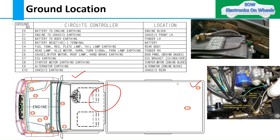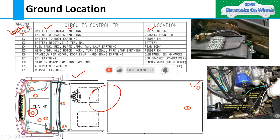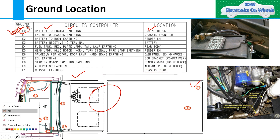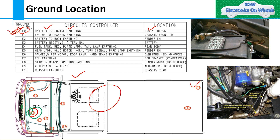Let's start with the grounding. The first grounding point is E0 — you are giving a reference grounding point. E0 is from the battery to engine earthing, which comes on the engine block. Here you can see this is the engine block and this is the location of E0, coming from the battery to engine earthing.